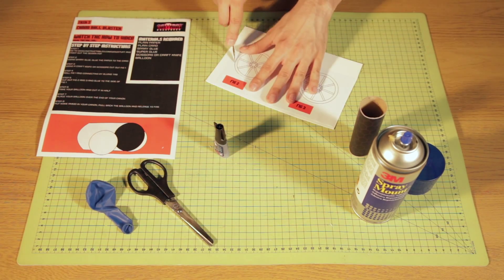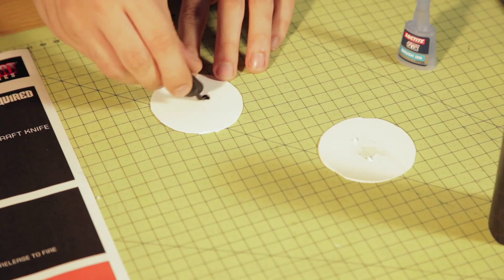Step 5. Cut out figure 2 and 3. Apply glue to the back of both and stick these to the side of your cannon body.